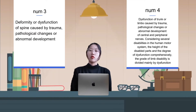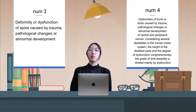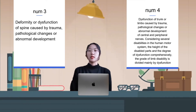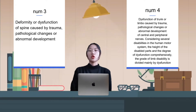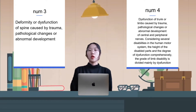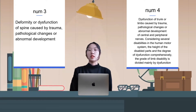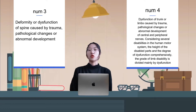Considering the number of disabilities in the human motor system, the location of the disabled parts, and the degree of dysfunction comprehensively, the grade of limb disability is divided mainly by dysfunction.